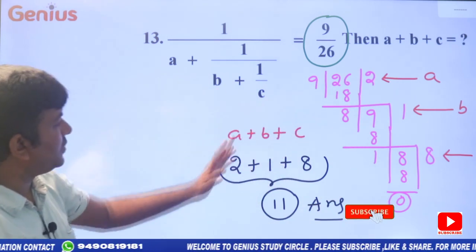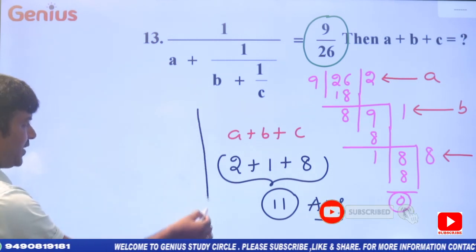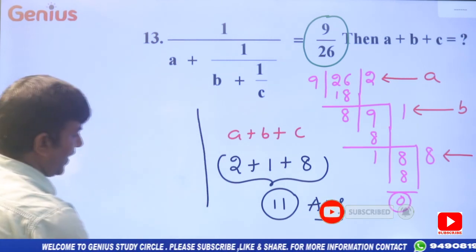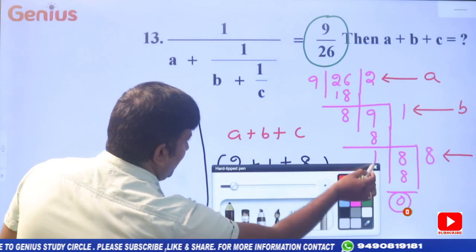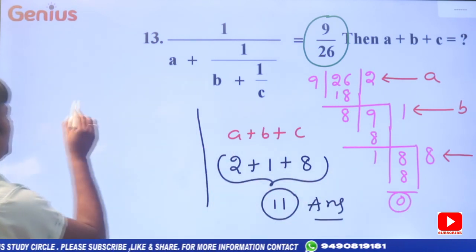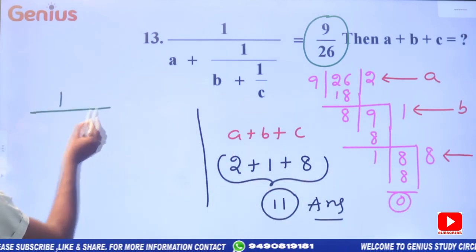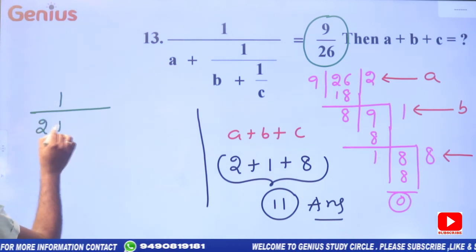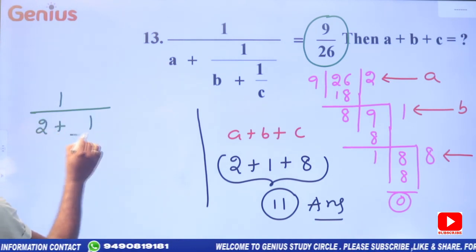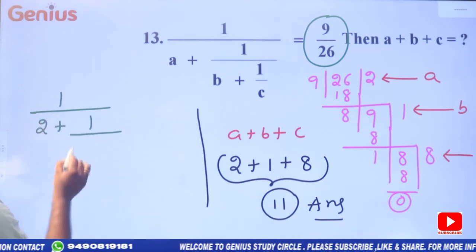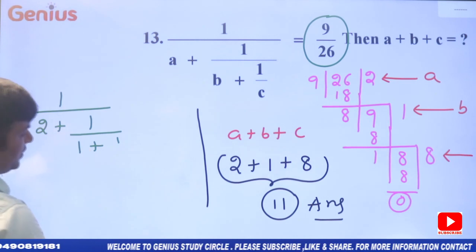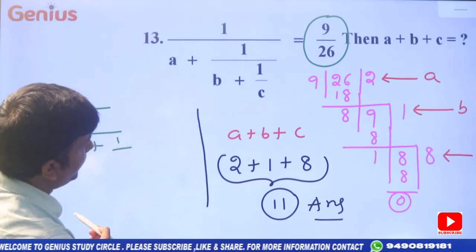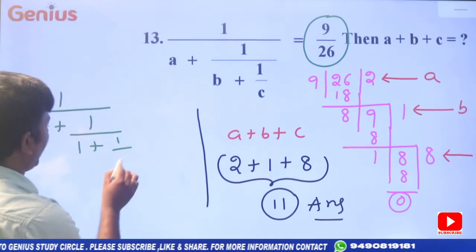To verify: expand and substitute the a, b, c values. 1 by a is 1 by 2; plus 1 by b, which is 1 by 1; plus 1 by c, which is 1 by 8. This confirms the original fraction.